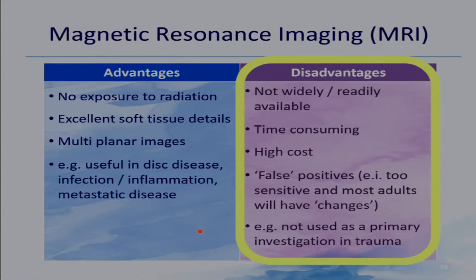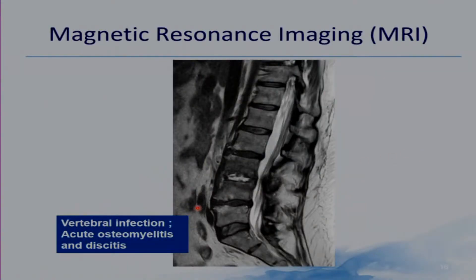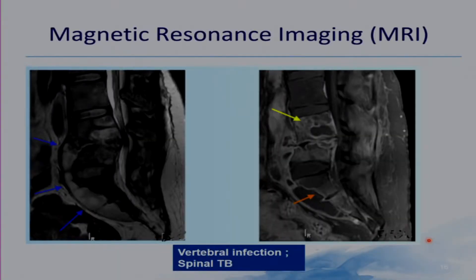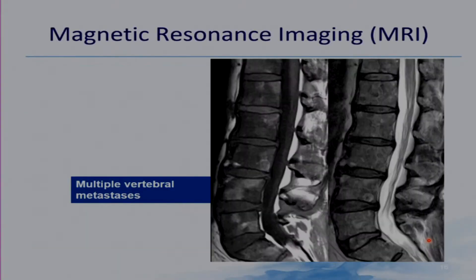MRI is not used as a primary investigation in trauma. Examples of MRI being used to good effect: this MRI shows acute osteomyelitis with discitis, this MRI shows vertebral spinal TB, and this MRI shows multiple vertebral metastases.